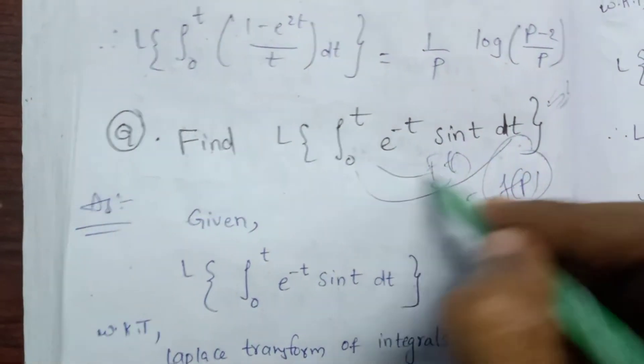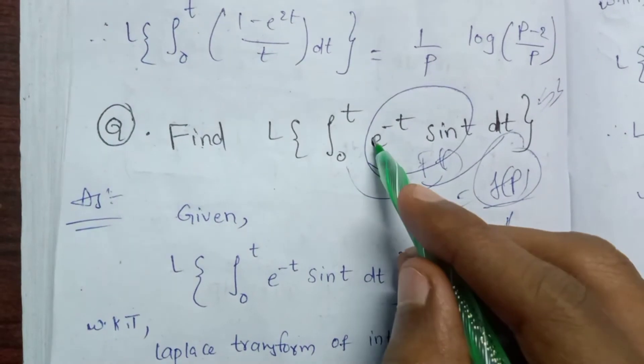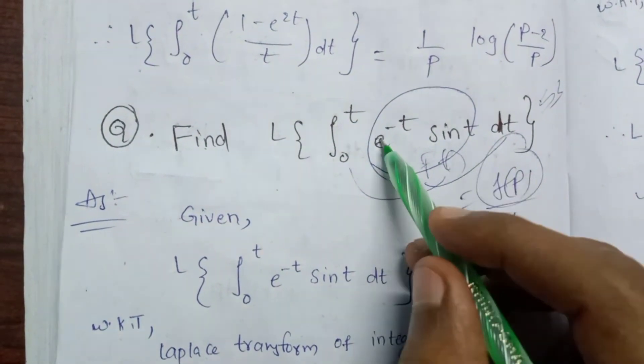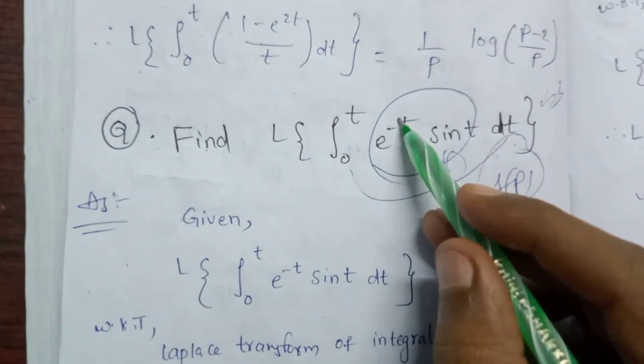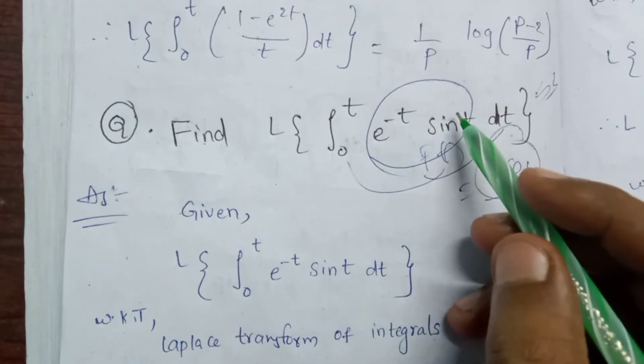Here f of t is e power minus t sin t. We apply the first shifting theorem here.